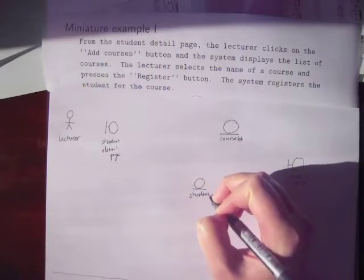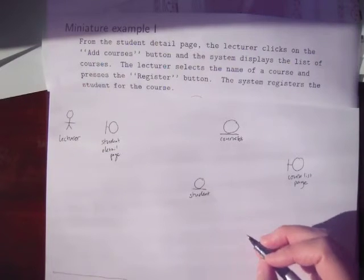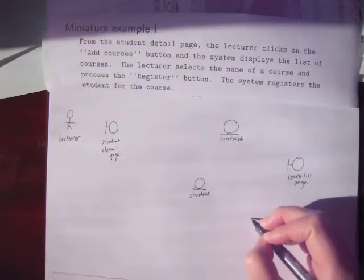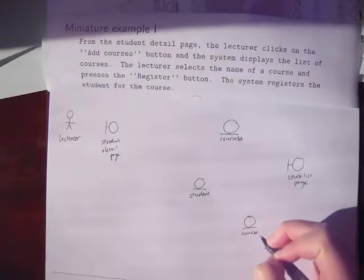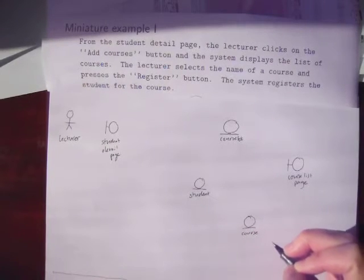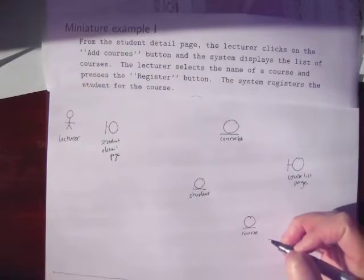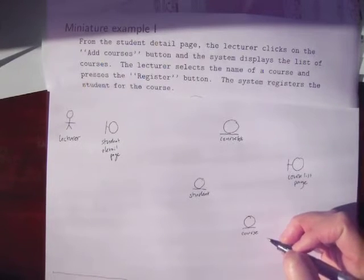Student, all lowercase because these are all instances. There's going to be a course. The previous version of this I went off the bottom of the camera screen. Hopefully I can avoid doing that this time. Now we've got all our nouns, our boundary objects and our entity objects, and we're ready to try to draw a picture of this use case.